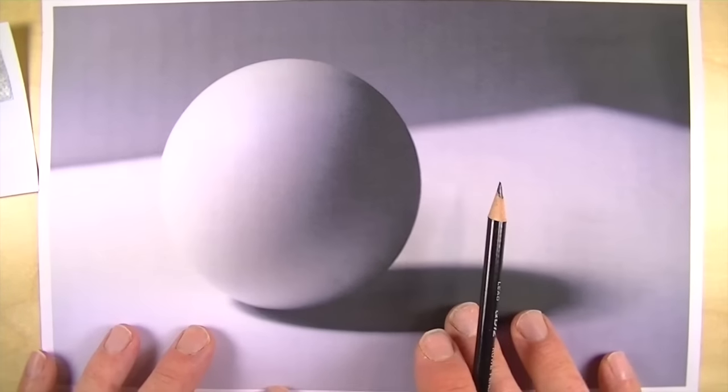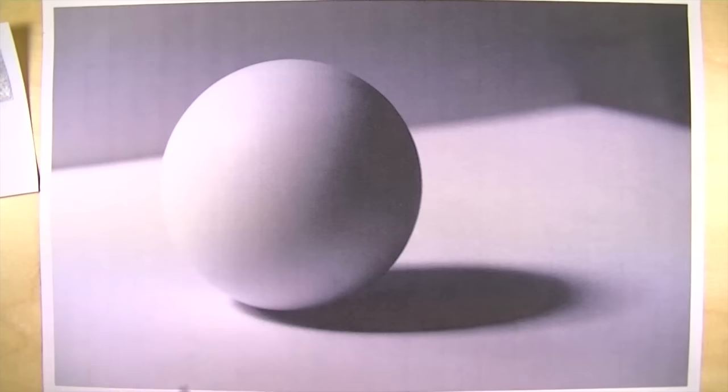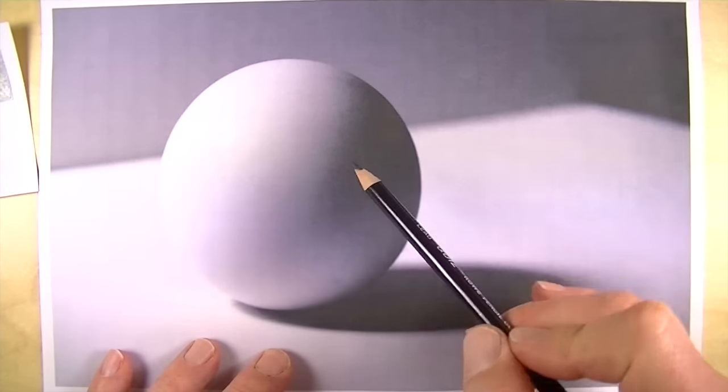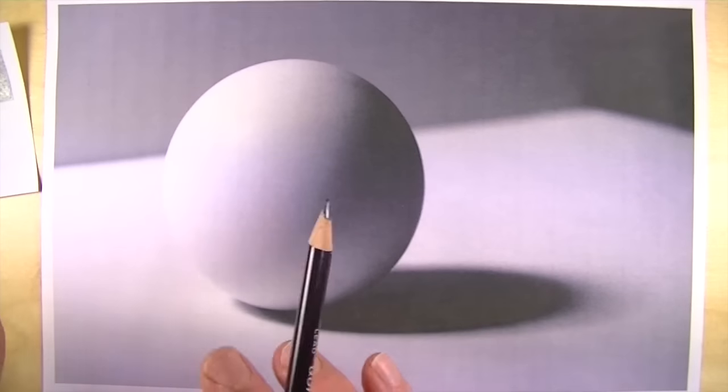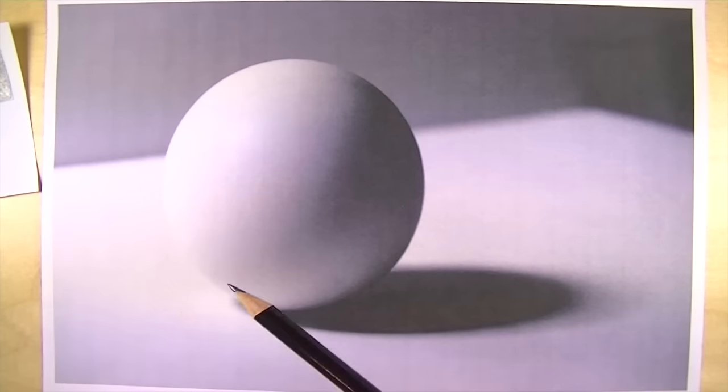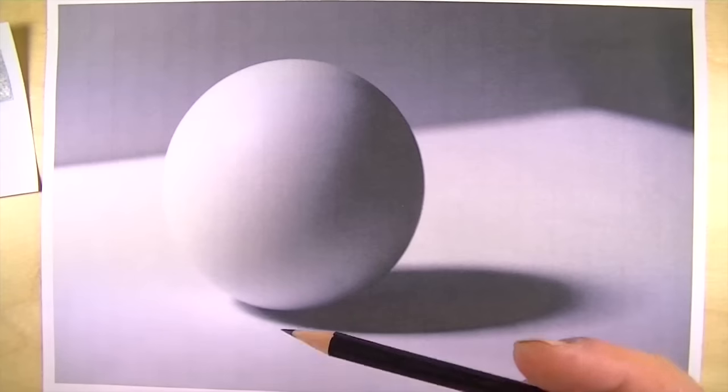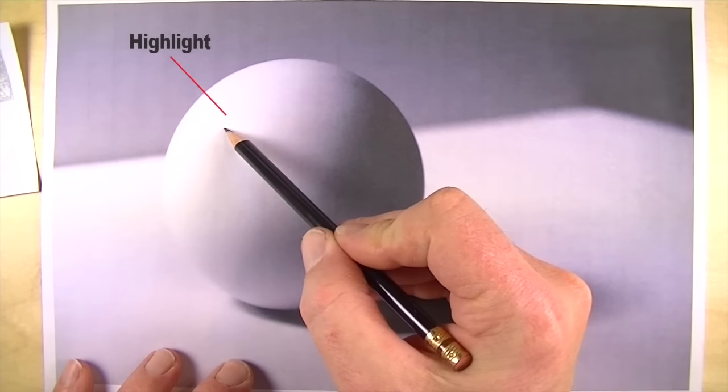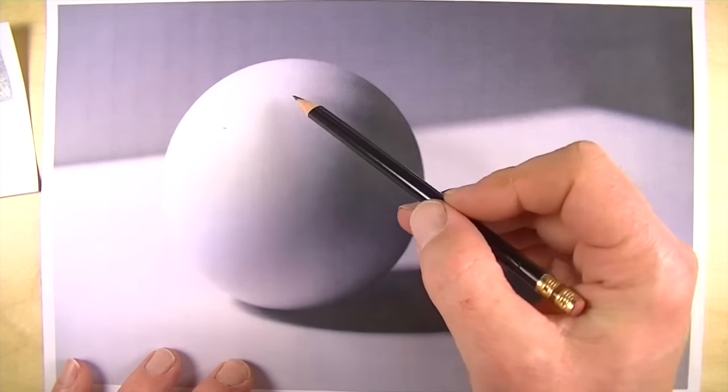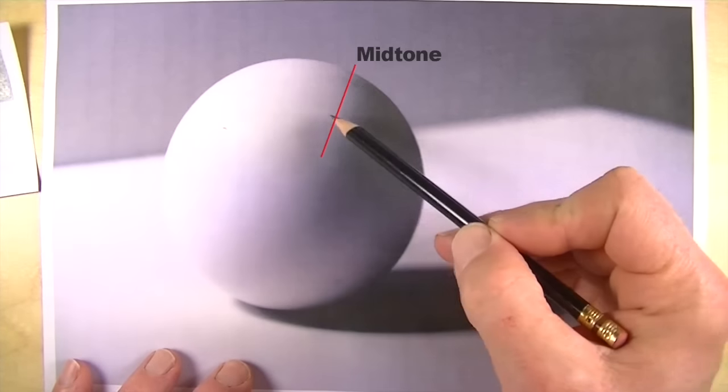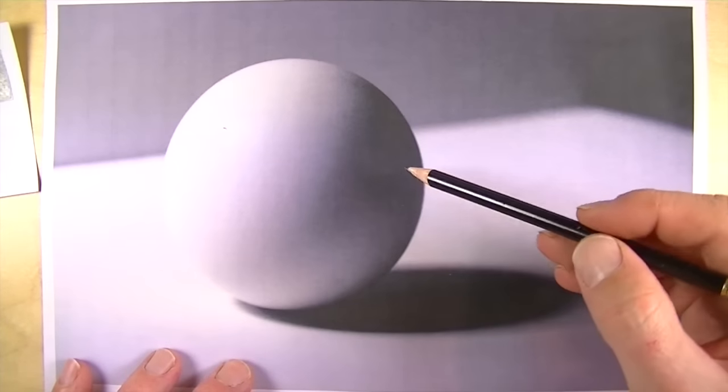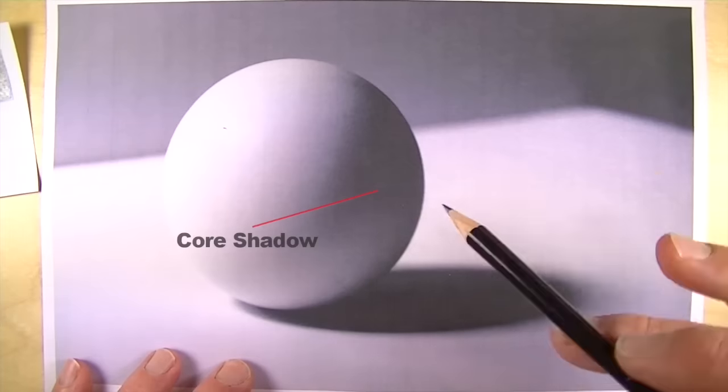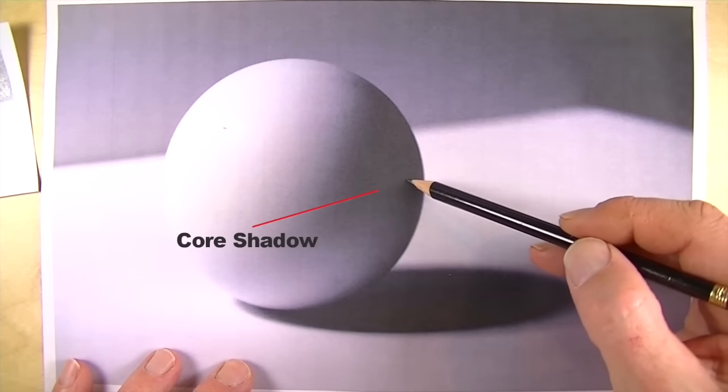Another reason why spheres are so good to explain value and the importance of value is because there are very defined areas on the sphere where light is hitting it, which is leading to the illusion of form. We have an area up here which is the highlight. Then we have this middle area right here which is called the midtone. And then we have this darker area that exists on the object, which is called core shadow.